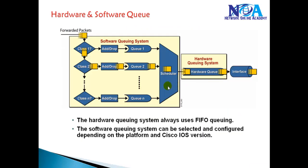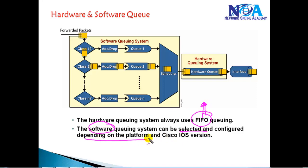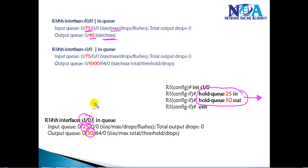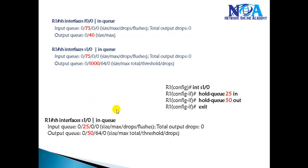By default, the hardware queue is always first-in first-out and we cannot do anything about it, but the software queue can be selected and configured depending on the platform and Cisco IOS version. In simple terms, software queuing allows us to arrange different types of traffic in different queues, send them in order, and give priority to specific traffic. To verify input and output queues, you can use the command 'show interface f0/0', which will show the maximum input queue and output queue packets allowed. You can change these parameters depending on the platform, and most of the time we don't prefer to change them — once the limit is reached, queuing mechanisms will start.